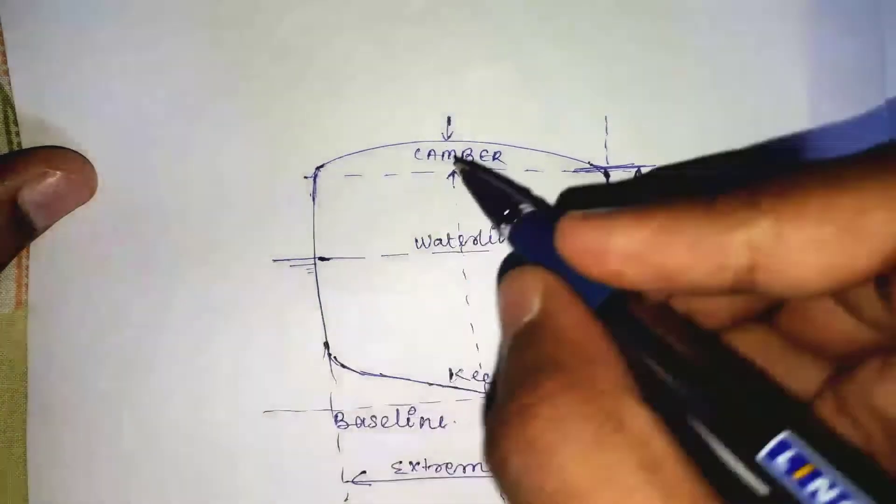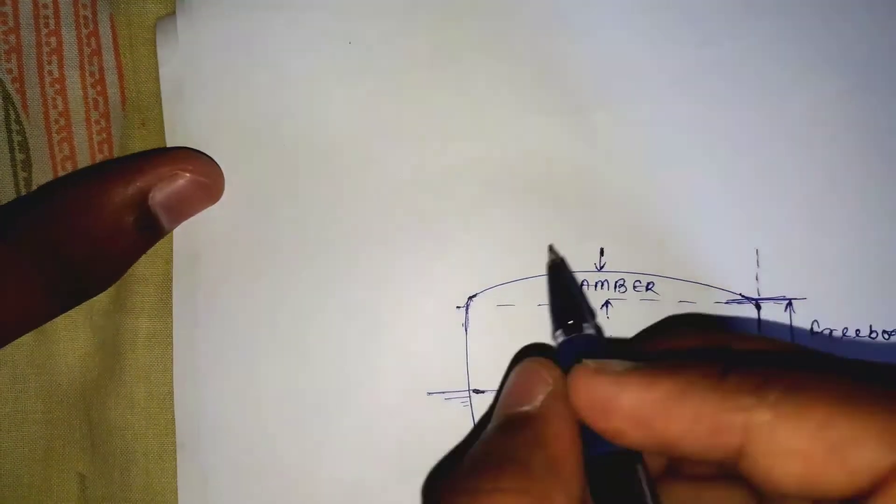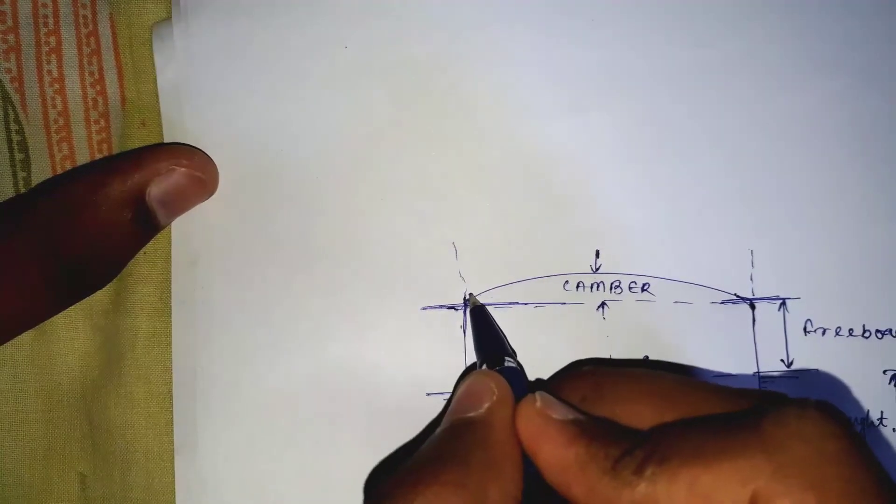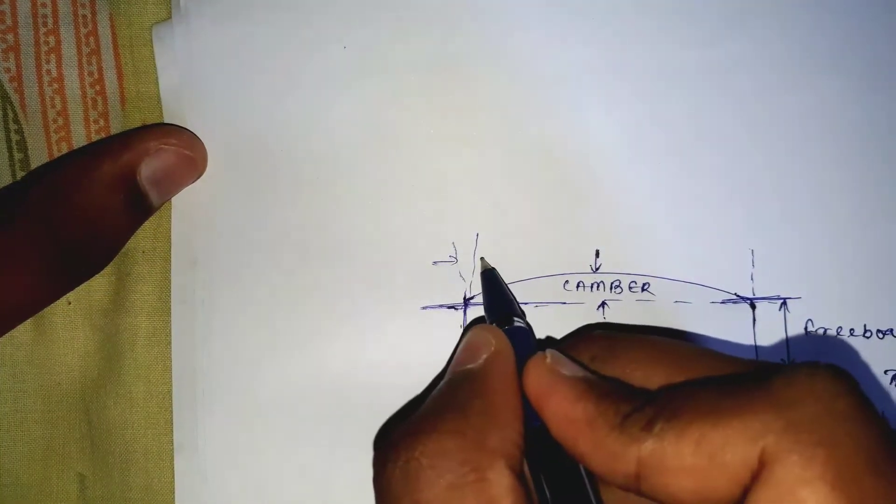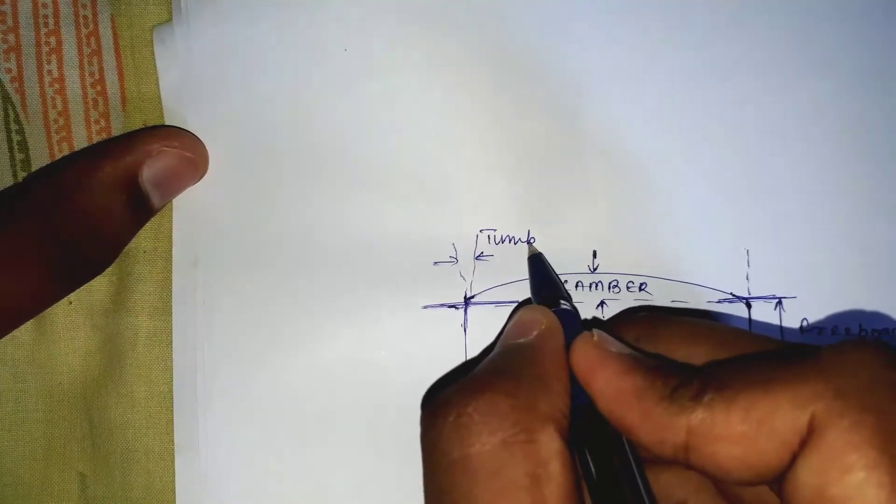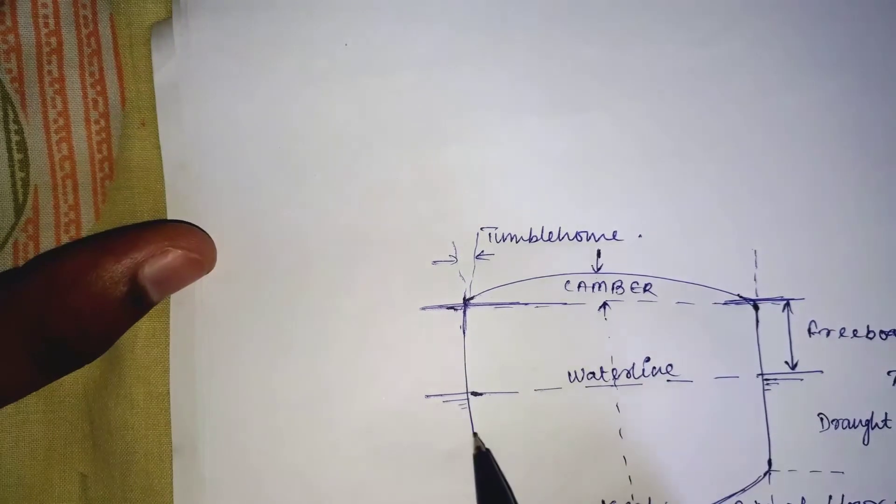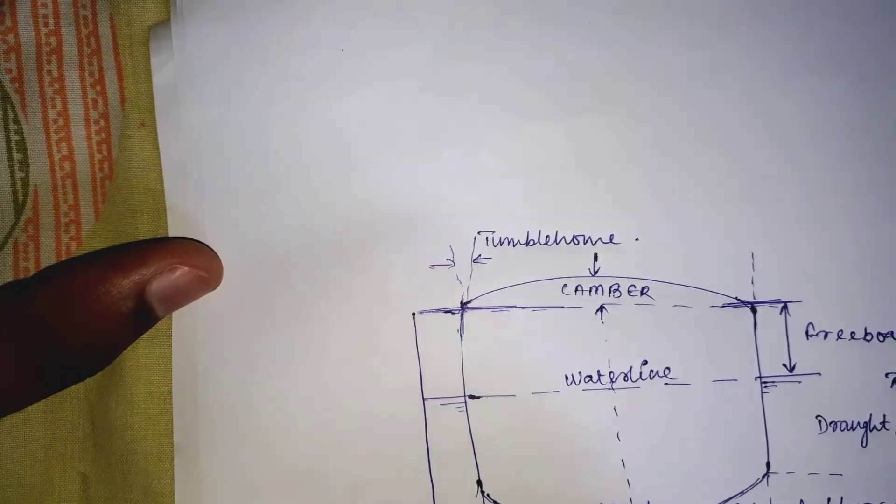Now comes another point, that is tumble home. Tumble home is basically the inward curvature of the shell plating at the sides. Now comes depth. Depth is of two types: molded depth and extreme depth.